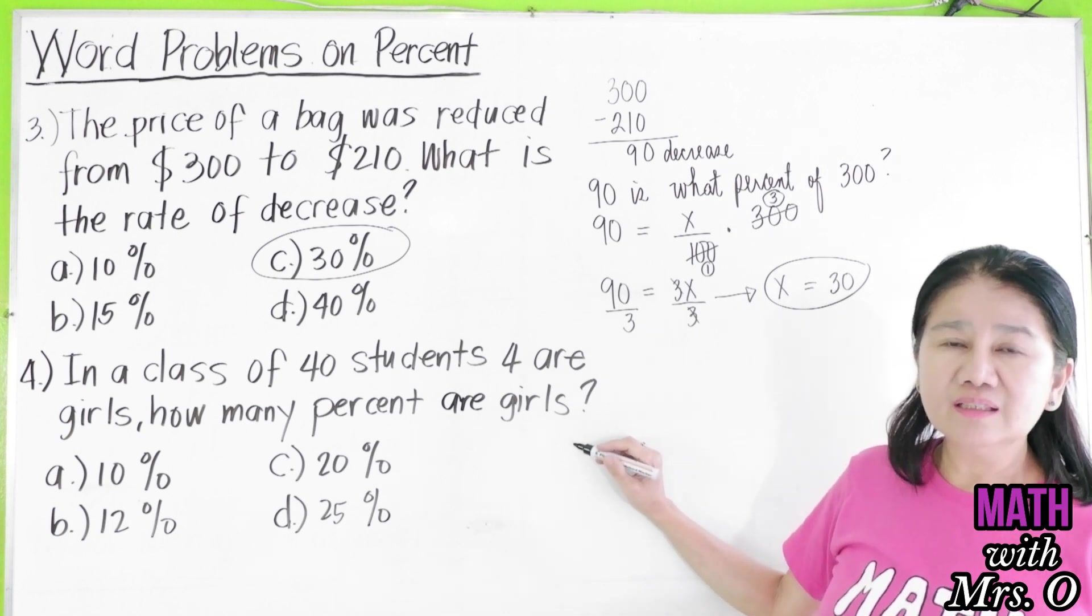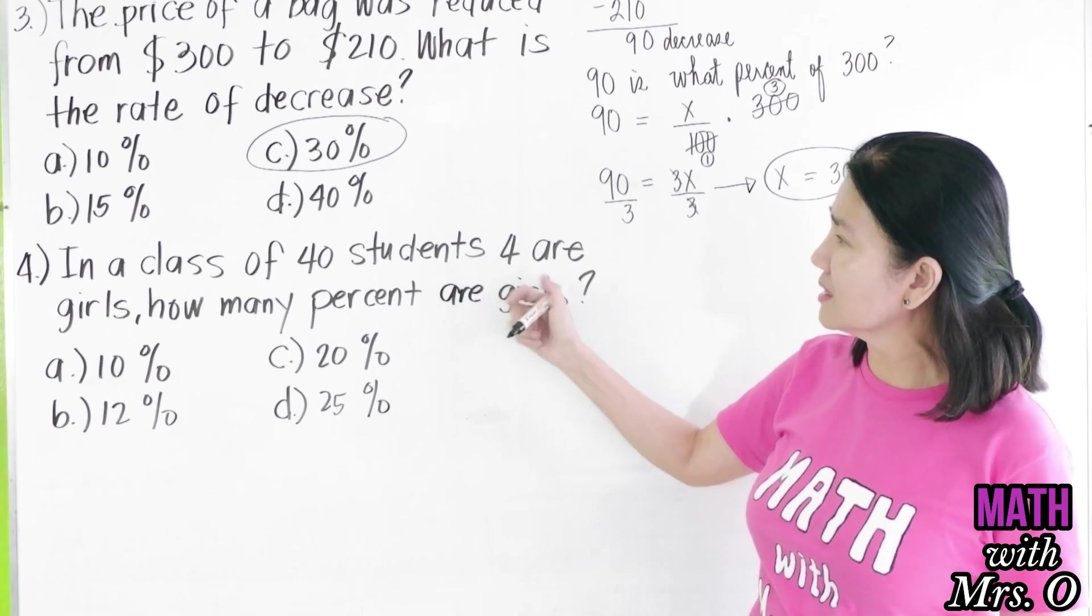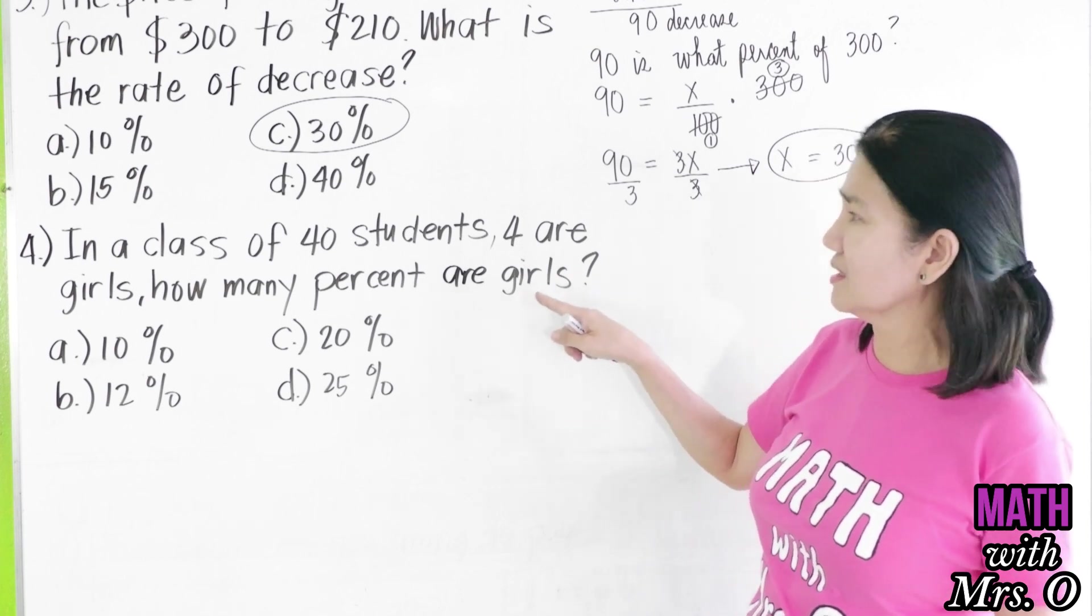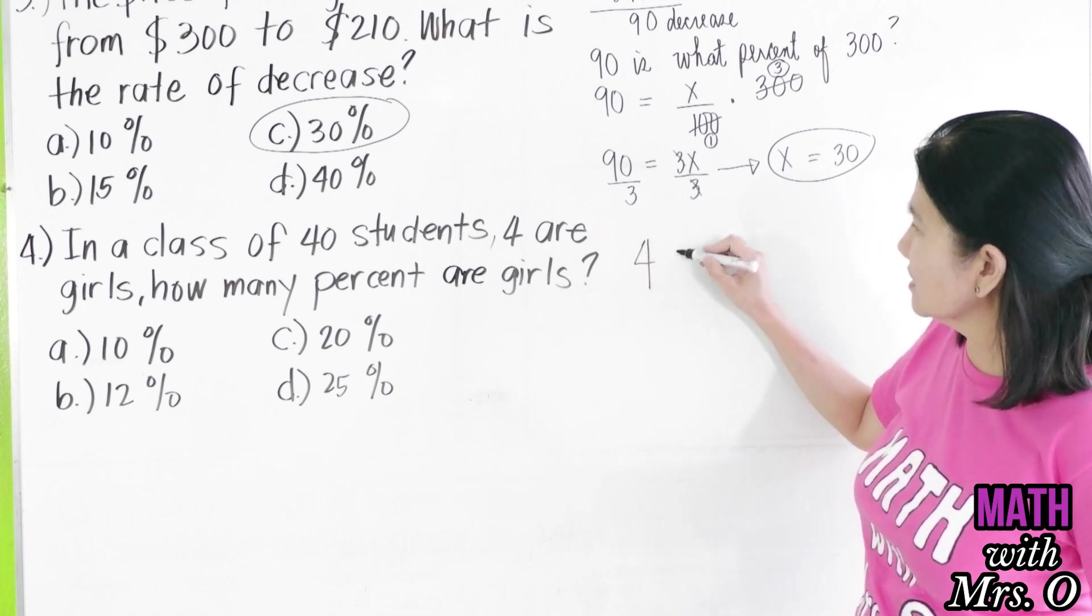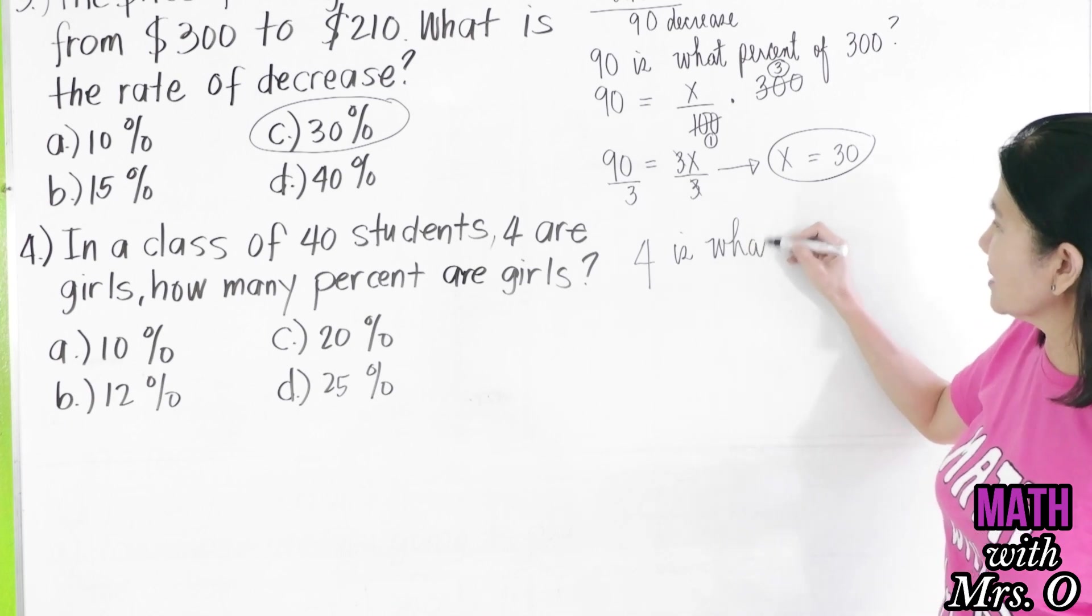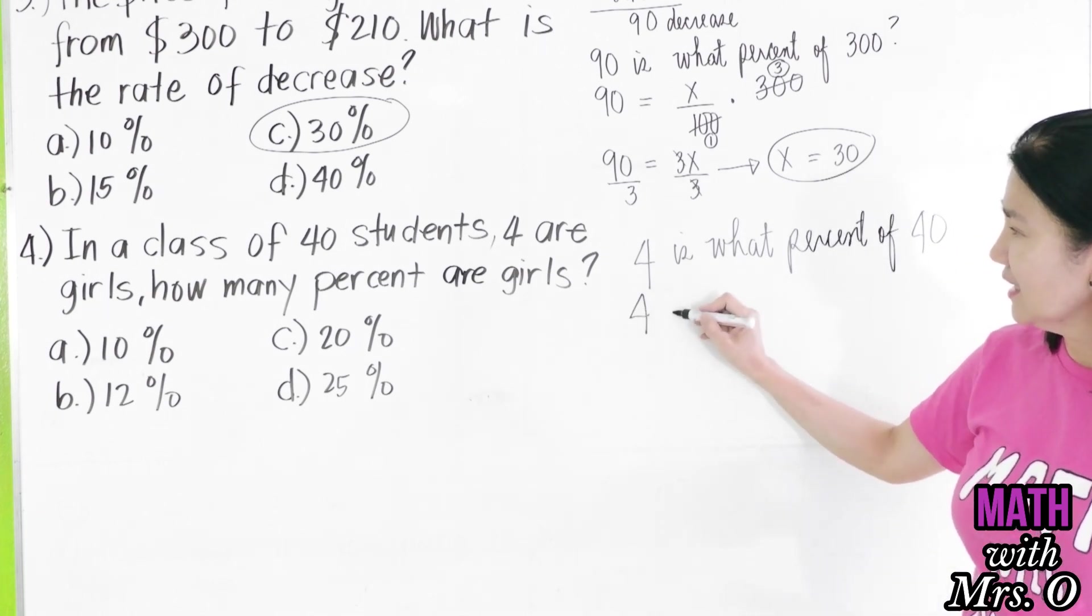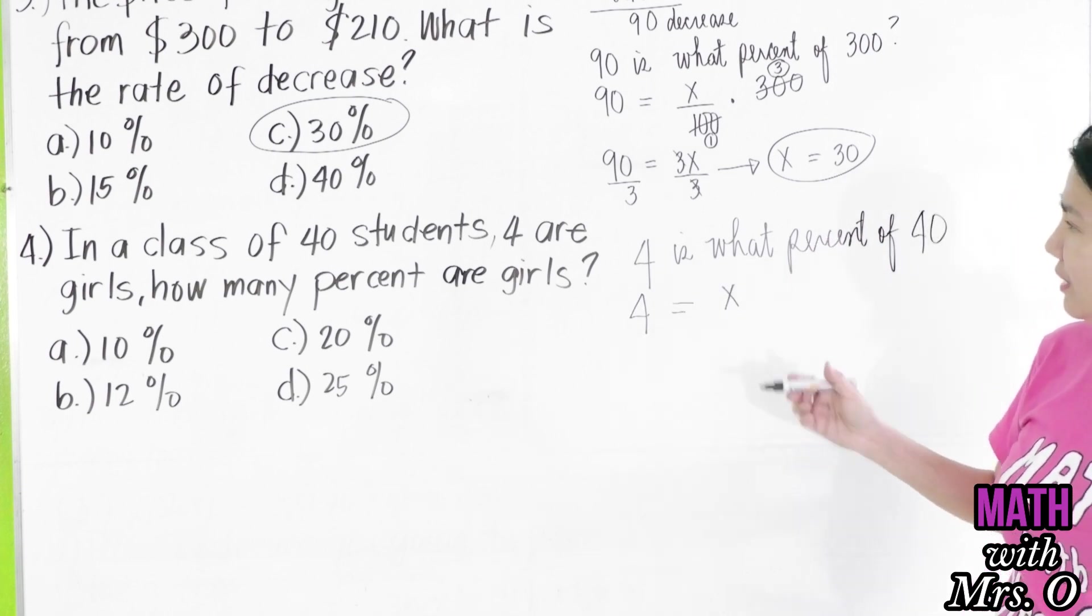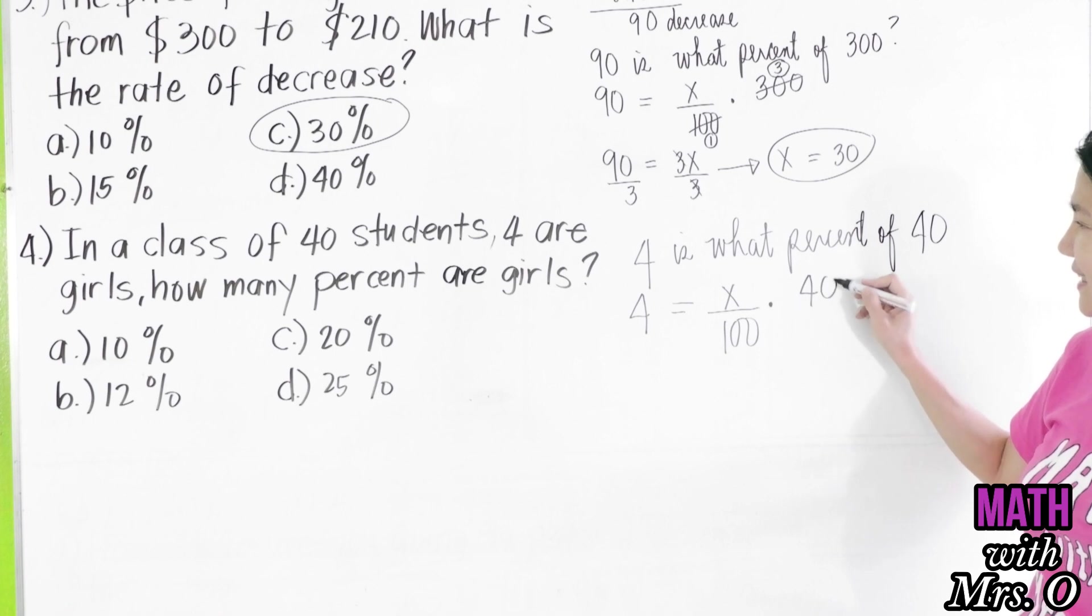In problem number 4, we have here, in a class of 40 students, 4 are girls. How many percent are girls? So, we're asking the question, 4 girls is what percent of the total number of 40? So, we have 4 equals what? We don't know, it's an unknown percent per 100 times 40.